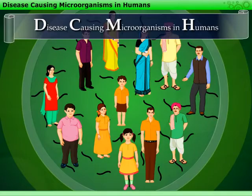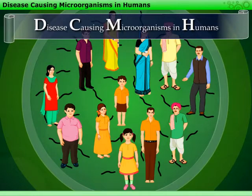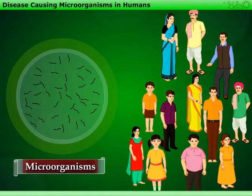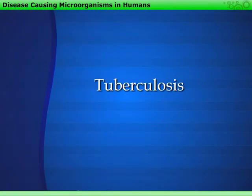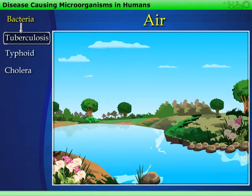Let us study some common diseases caused by microorganisms in human beings. Tuberculosis, typhoid and cholera are bacterial diseases. The mode of transmission of tuberculosis is air.